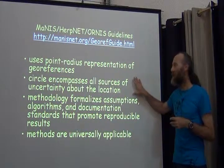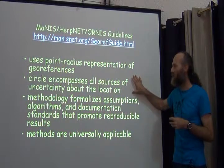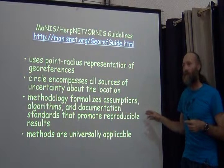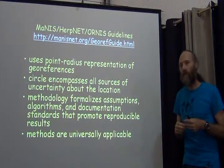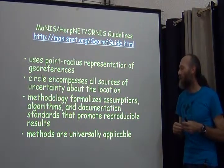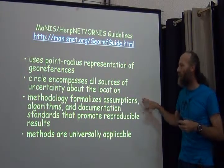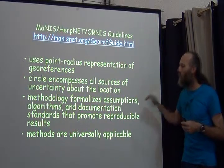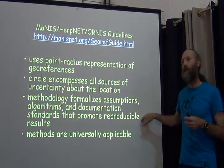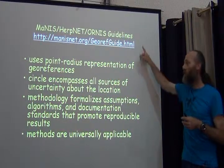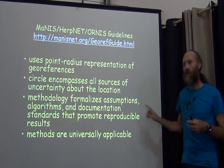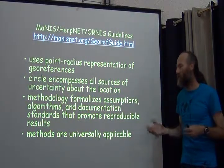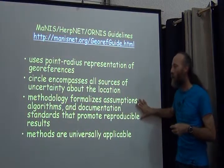There should be no chance that the locality is on the outside of the circle. These methods formalize the assumptions that have to be made, and document how to use the standards like Darwin Core. The purpose is that if someone else georeferences from the same location using those guidelines, they should end up with the same result — same rules, same inputs, same results. That's the goal.